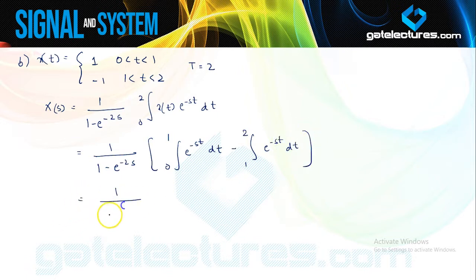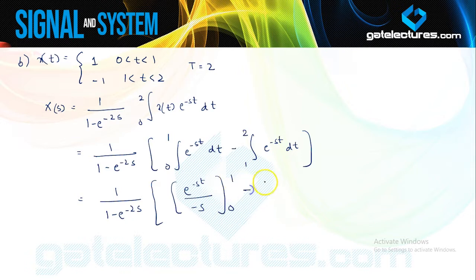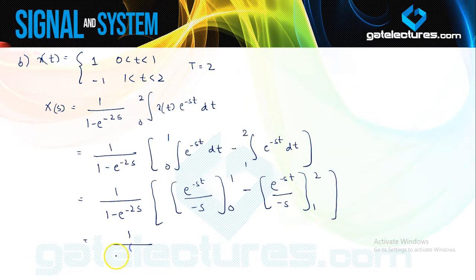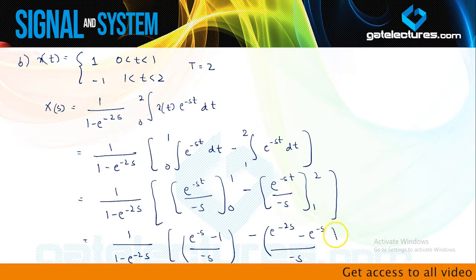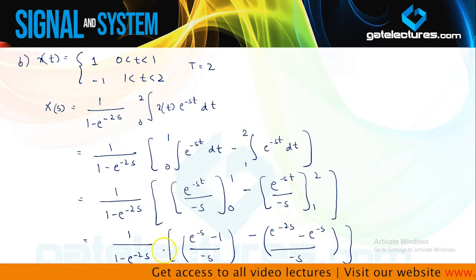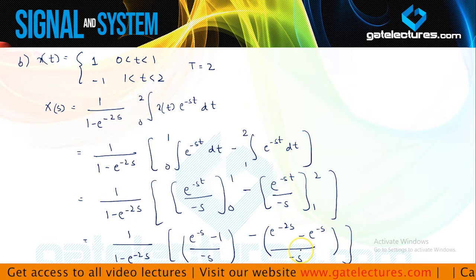Performing this integration: 1 upon (1 minus e to the power minus 2s), the first integral gives e to the power minus st upon minus s with limits 0 to 1, and the second gives minus the integral from 1 to 2 of e to the power minus st dt. Evaluating limits, I obtain e to the power minus s minus 1 upon minus s, minus e to the power minus 2s minus e to the power minus s upon minus s.